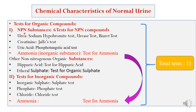So in all, there are five organic compounds present in urine to be tested: urea, uric acid, creatinine, hippuric acid, and ethereal sulfate. Tests for inorganic compounds include the inorganic sulfate for which we do the sulfate test, phosphate for which we do the phosphate test, chloride for which we do the chloride test, and ammonia for which we do the test for ammonia. So there are three groups: test for organic compounds, test for NPN substances, and test for inorganic substances.